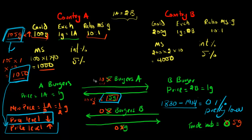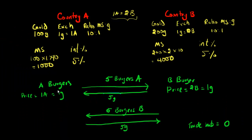Now we're going to talk about some of the disadvantages to being on the gold standard. We're going to use the example from the previous video, but assume there hasn't been any technological innovation. To recap: Country A makes Country A burgers for the price of one Country A dollar, which is equivalent to one gram of gold.